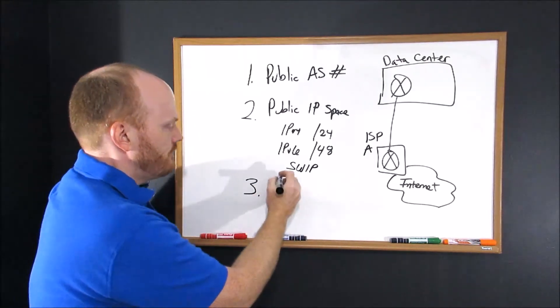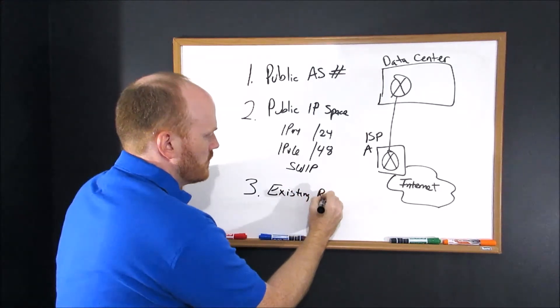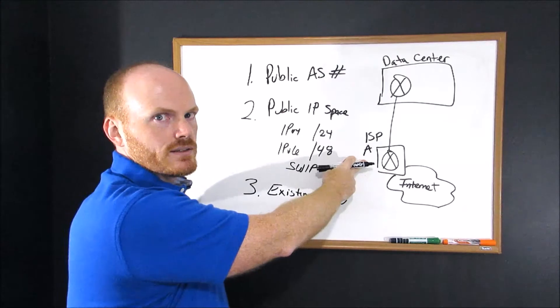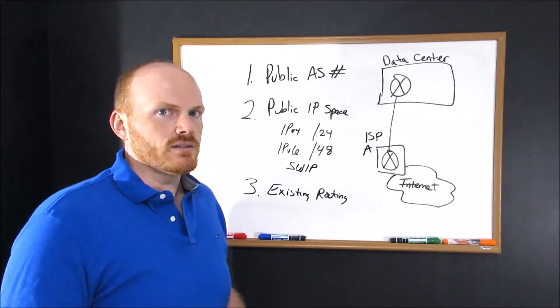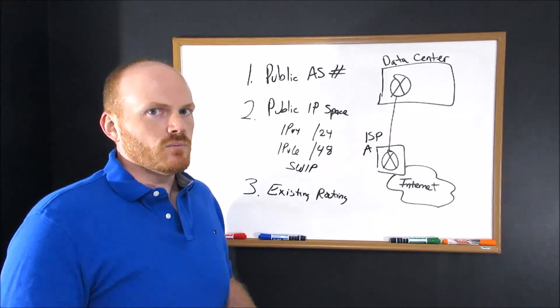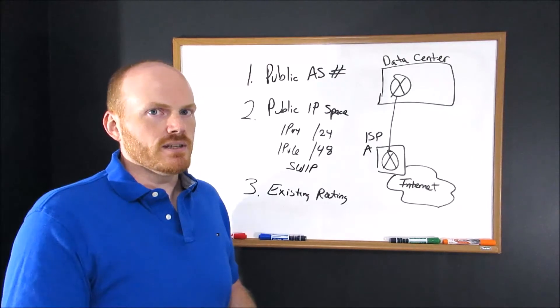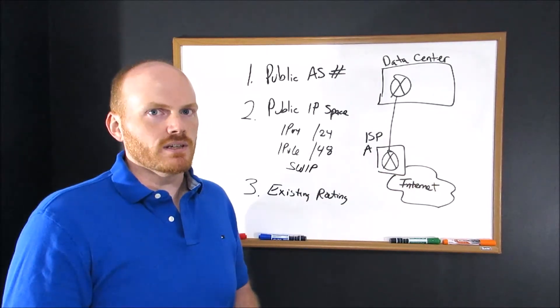Third step. You want to take a look at how this existing ISP connection is configured into your data center. If you only have one connection with one ISP, more than likely that connection is set up for static routing today. You're going to have to change that to BGP before you can purchase another connection with a different ISP.